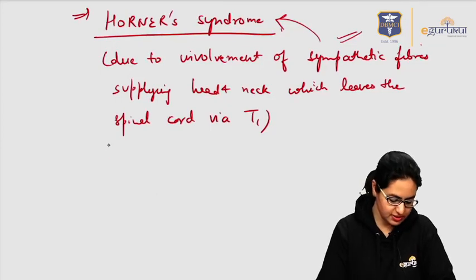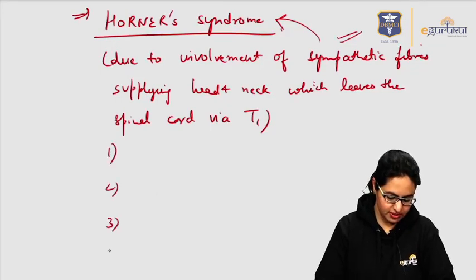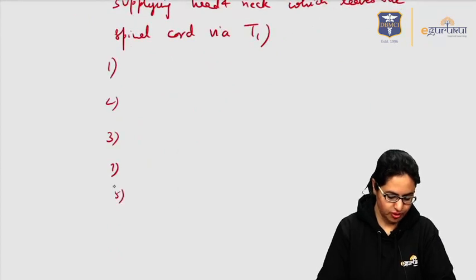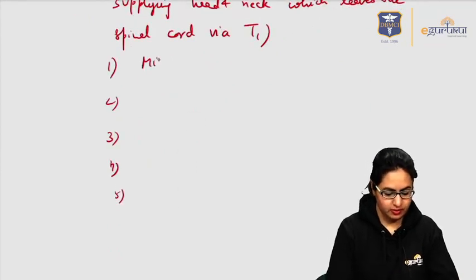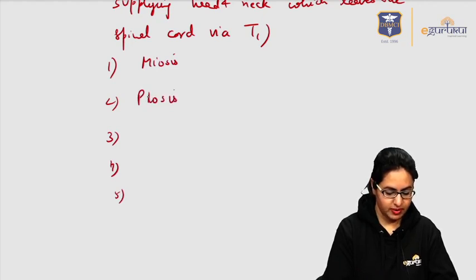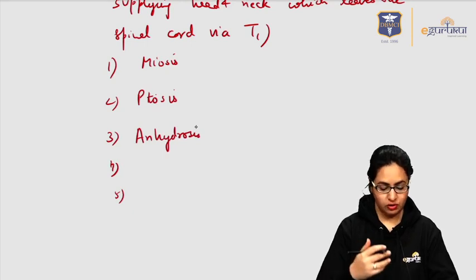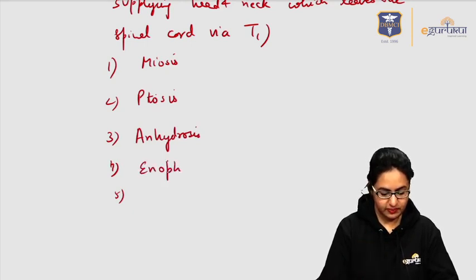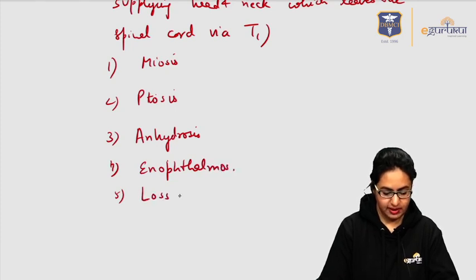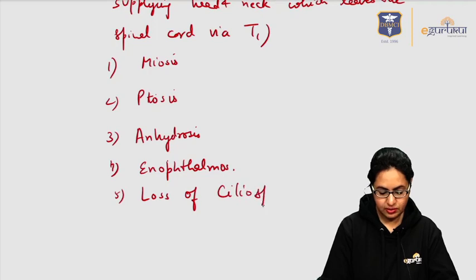There are five components of Horner's syndrome: miosis — which is constricted pupil; ptosis — which is drooping of the upper eyelid; anhydrosis — which is absence of sweating over the face; enophthalmos — which is sunken eyeball; and loss of the cilio-spinal reflex.